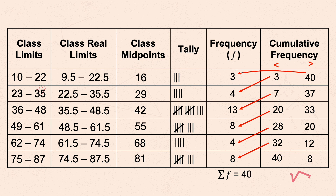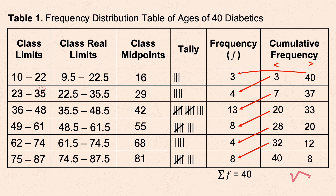That is how you construct a complete frequency distribution table. You also need to provide a title — label it as Table 1 since this is the first table in our statistics discussion. The title should begin with 'Table 1: Frequency Distribution Table' followed by a description of the data from the given problem.